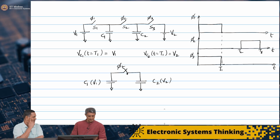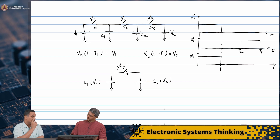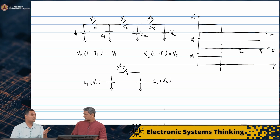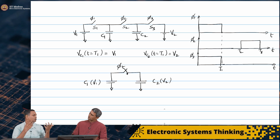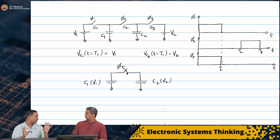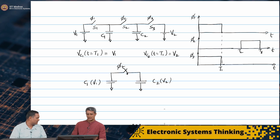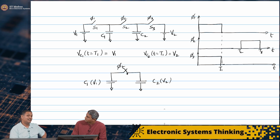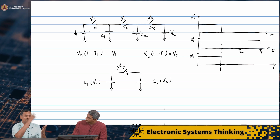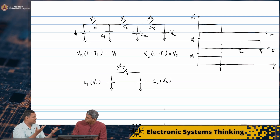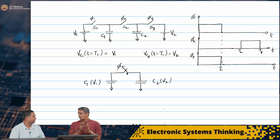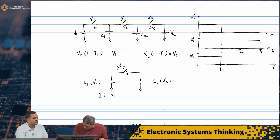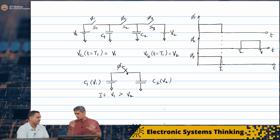We can apply again charge conservation, because charge always gets conserved — I do not have anything bringing in charge to the system. And I also know that if I wait for a long enough time, the two voltages have to be equal. The direction of current flow depends on which one has the higher voltage. So we will assume here v1 greater than v2; otherwise the opposite is going to happen.